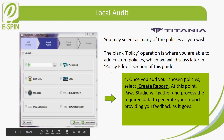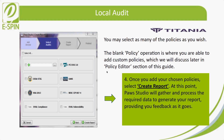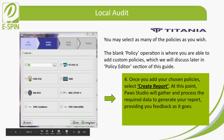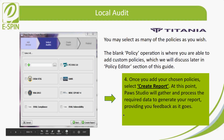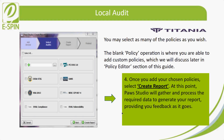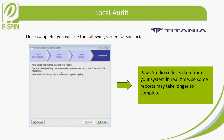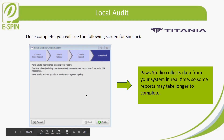After selecting as many policies as desired — the blank option is for custom policies which will be discussed later in the policy editor section — once policies are added and chosen, click 'Create Report.' At this point, Post Studio will gather and process the required data to generate the report, providing feedback as it goes.